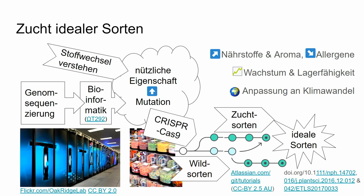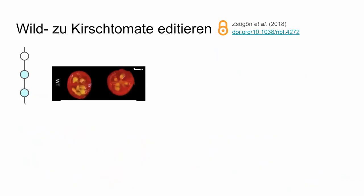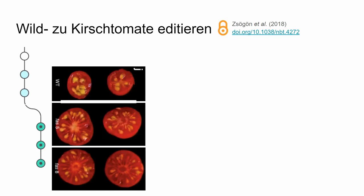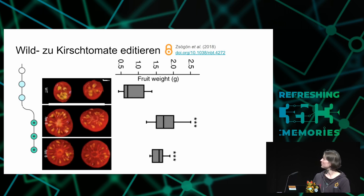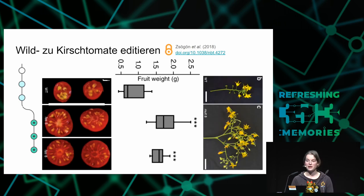As a society we should think about climate change and resilience against threats like new pathogens. A concrete example recently published used the wild cherry tomato: wild tomatoes are about pea size, but with only about four deliberate changes it was possible to increase the size greatly to about cherry tomato size. The fruit weight tripled roughly, and there were also many more blossoms, meaning many more fruits on the same plant.